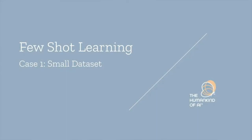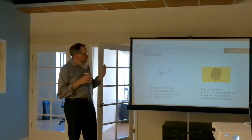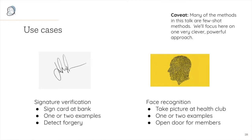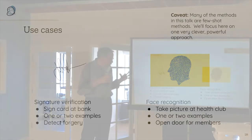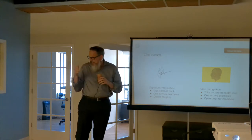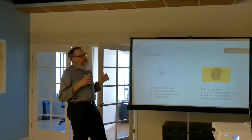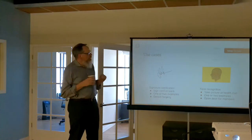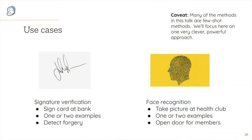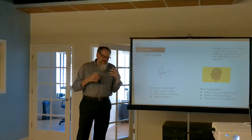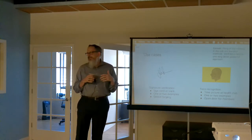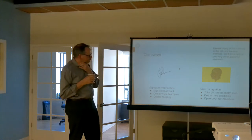Now, few-shot learning — the last approach for small datasets we can't really expand. Use cases include signature verification: you sign a card when you open a bank account, maybe giving just one or a couple of examples, and you want to detect forgery. Another is face recognition: take a couple of pictures when someone enrolls at a health club, and you want the door to open for members. What we'll talk about is a very clever way of dealing with this problem that has shown tremendous promise and is widely used.